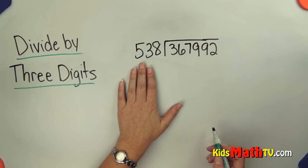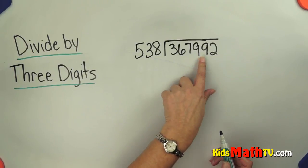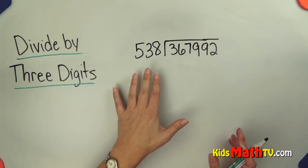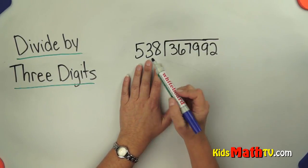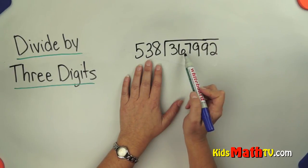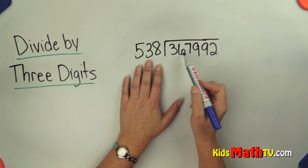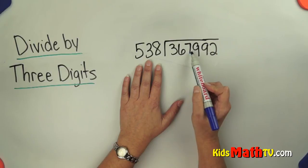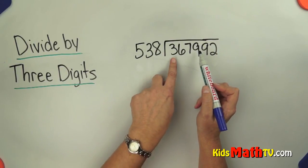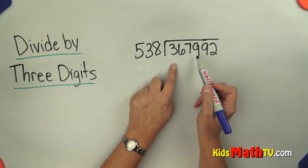So we want to know how many 538s are in 367,992. This is about 500, which kind of helps me think a little bit. So about how many 500s are in three? Well there's none. How many in 36? None. 367? None. All right, so now we're all the way up to 3,679. Well I know that there are two 500s in 1,000, so there's at least 6, double that, and maybe another one, 7.